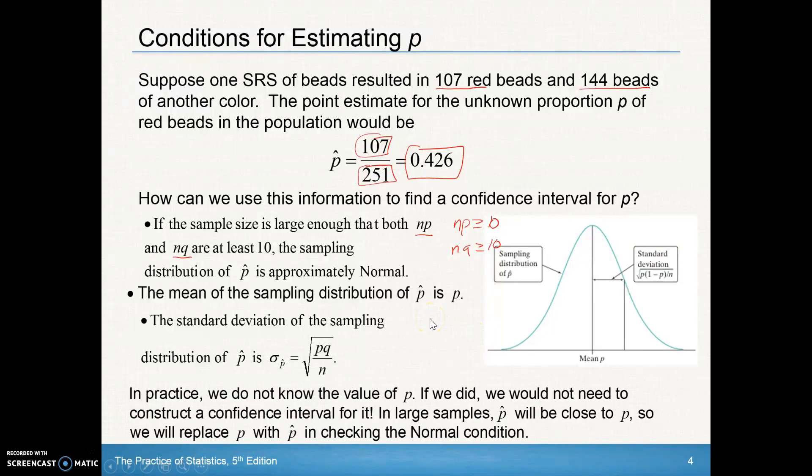In practice, we do not know the value of p. We don't know that true population proportion. In large samples, p hat will be close to p. So we'll replace p with p hat in checking the normal condition because we can't check if we don't know what that p is. So we'll substitute p hat in for this equation, and thus this would be q hat as well, if they're unbiased estimators.